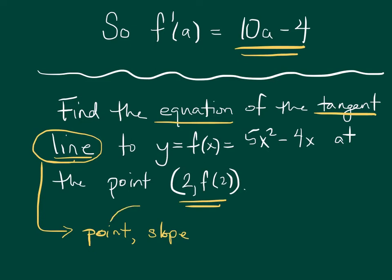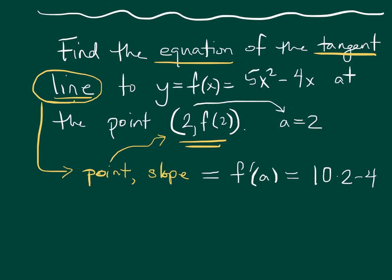Our point is going to be whatever point this is, 2 comma f of 2. And our slope is going to be given by f prime, which we just found, plugging in a. If I plug in a equals 2, then our slope is going to be 10 times 2 minus 4, which is 16.